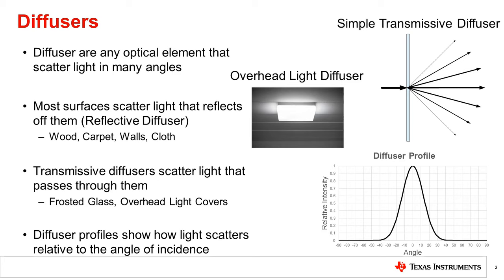Transmissive diffusers can also be created by using small lens arrays called a Fresnel diffuser, often used in covers for overhead lighting to more evenly light a room. It is transmissive diffusers we discuss to increase the field of view for light sensors.